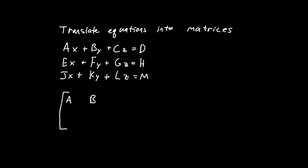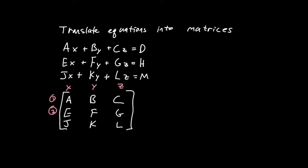So we'll have a, b, and c; e, f, and g; j, k, and l in that first matrix — just the coefficients on x, y, and z. All of these are x coefficients, all of these are y coefficients, and all of these are z coefficients, in the first equation, the second equation, and the third equation.